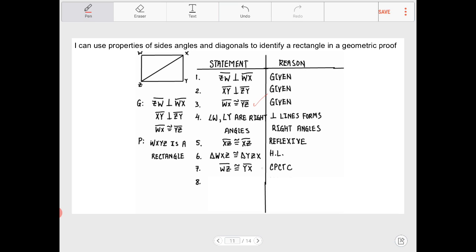...is congruent to YZ and WZ is congruent to YX, that those opposite sides are congruent and we have right angles, we can combine them all together.